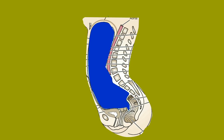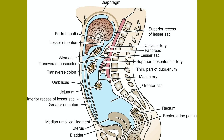The potential space between the parietal and visceral layers is called the peritoneal cavity. In males this is a closed cavity, but in females it is in communication with the exterior through the uterine tubes, the uterus and the vagina. The peritoneal cavity is the largest cavity in the body and it is divided into two parts: the greater sac and the lesser sac.